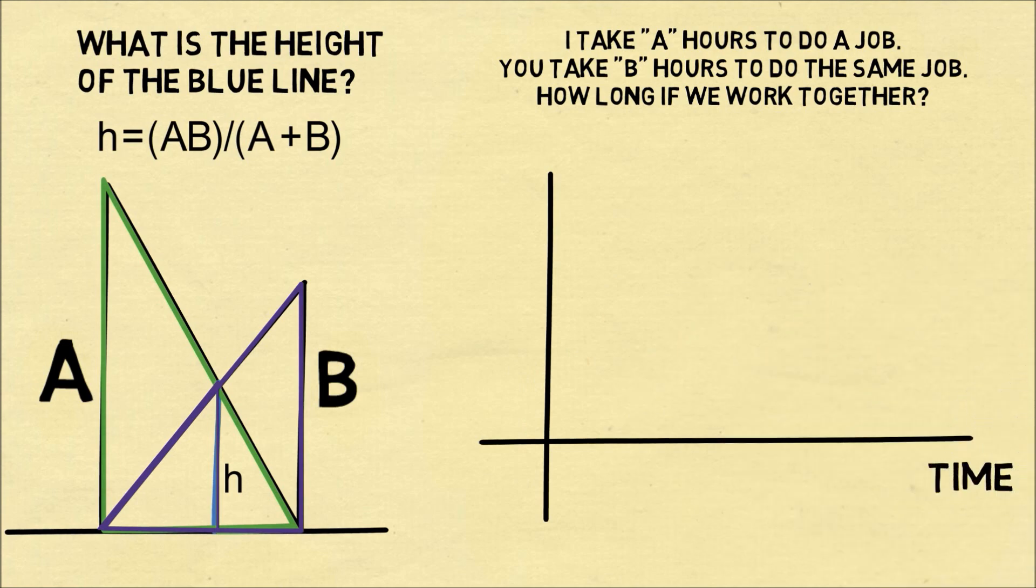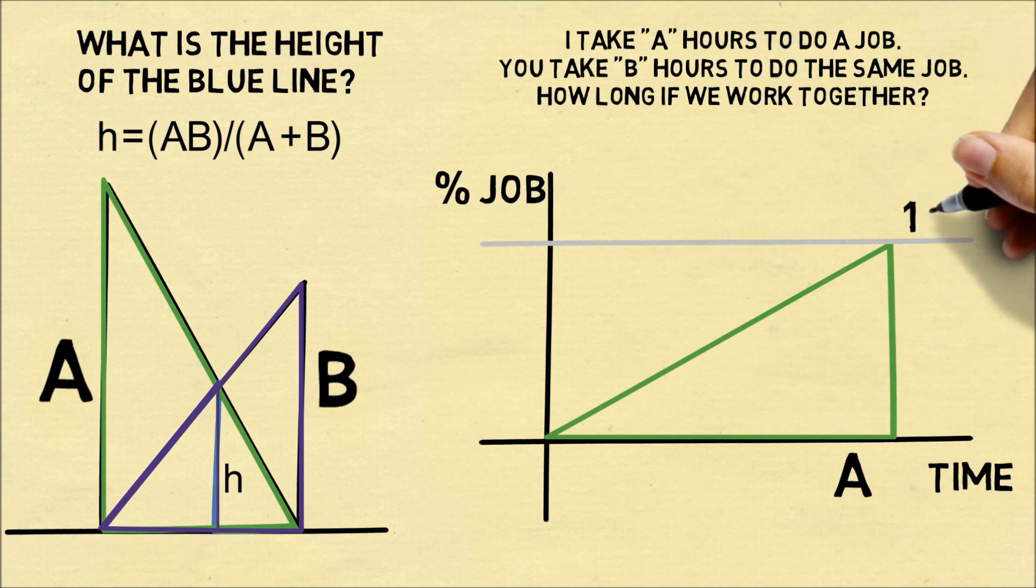So let's draw a graph where the horizontal axis is time and the vertical axis is the percentage of the job completed. If I do a job in a hours, that means it will take me a hours to get a hundred percent of the job done. And I will linearly increase the percentage of the job from zero to a hours.